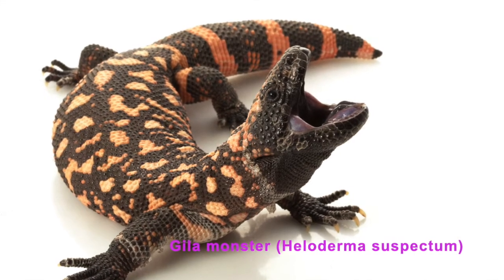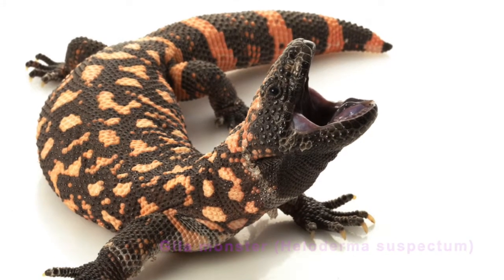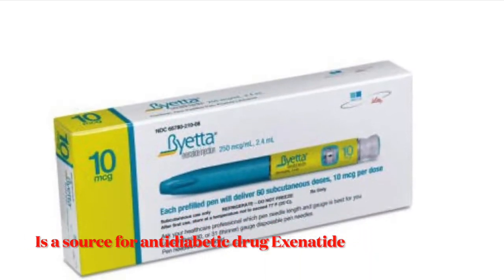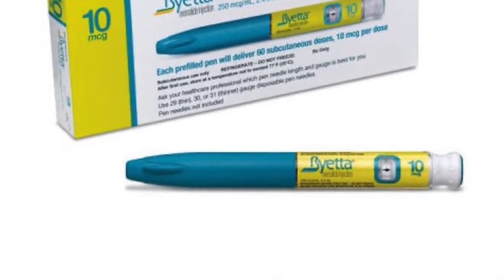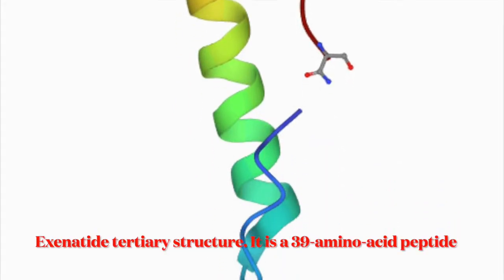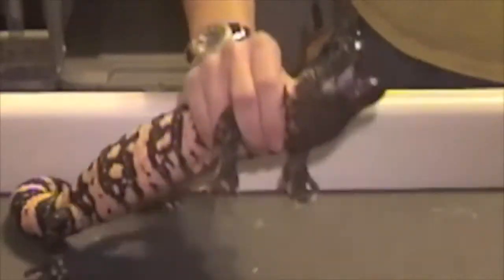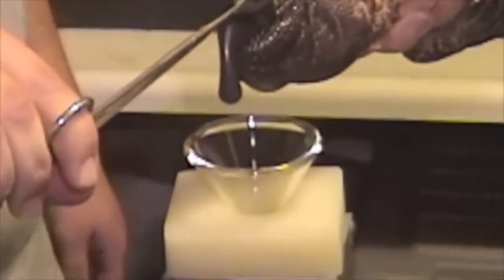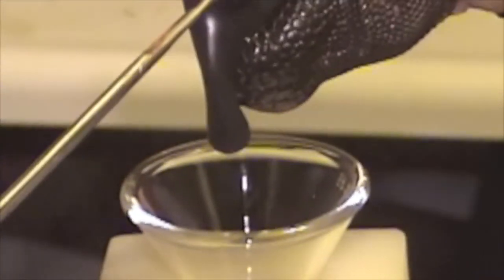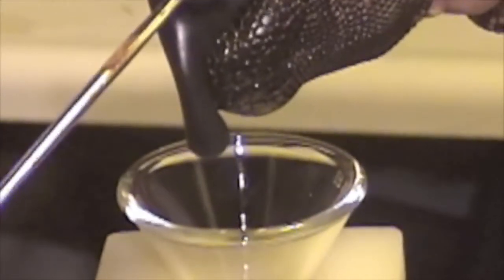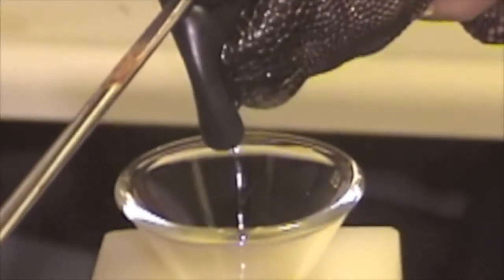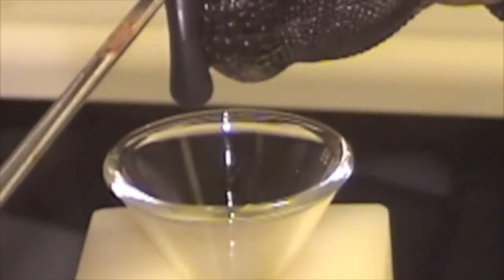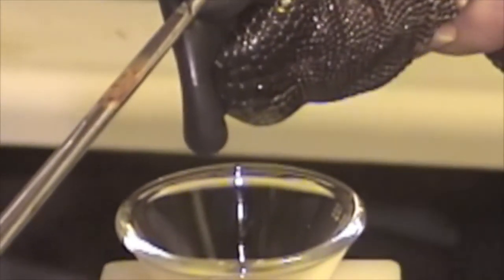Here we go. The venom glands of these lizards are in the lower jaw. You can see where the jaw looks fat. Those are the venom glands.